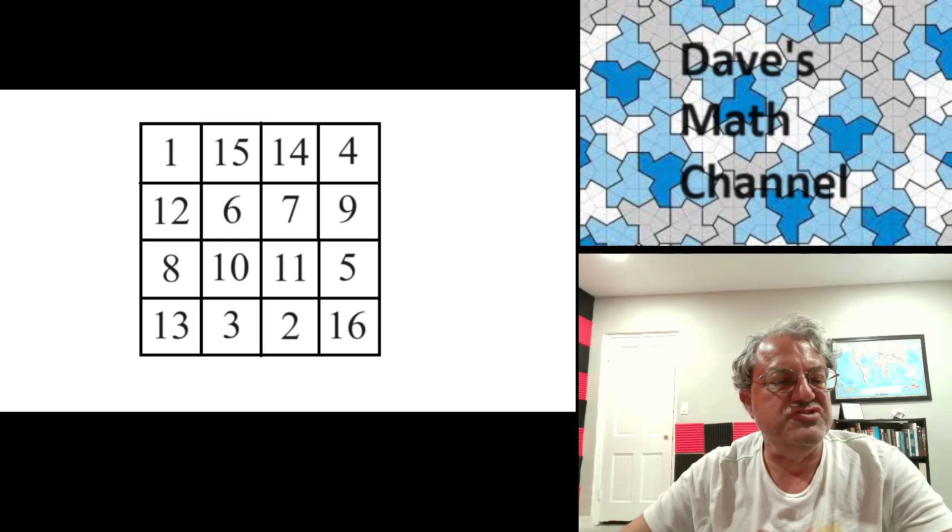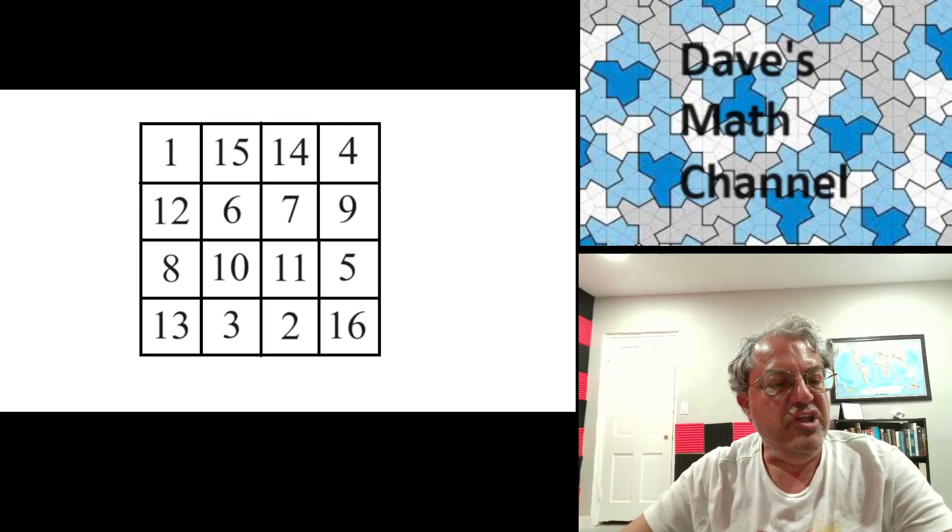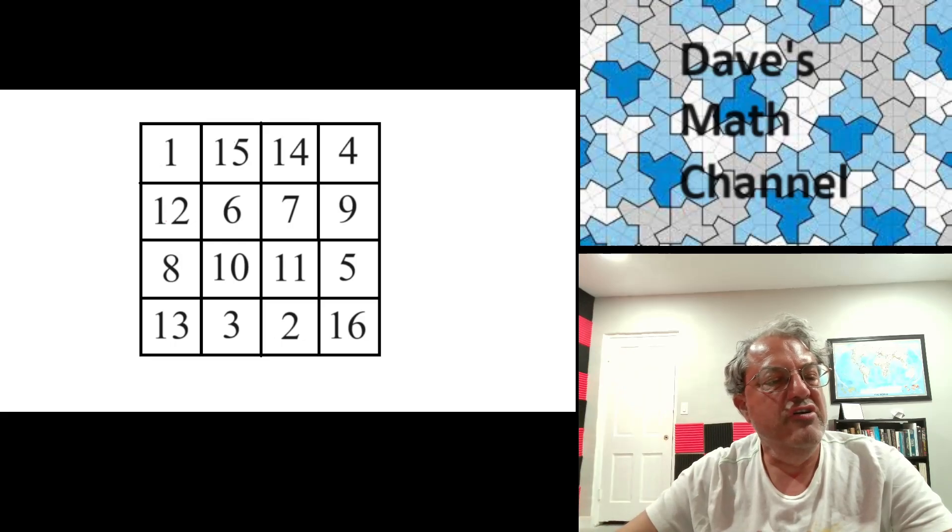But you actually have some additional sets of numbers that add up to 34 as well. For instance, the four corners, the four numbers in the middle, and if you take any edge, the two numbers in the middle of that edge and the opposite edge—like 15, 14, 3, and 2. And if you look at the left and right edges, 12, 8, 9, and 5 also add up to 34.